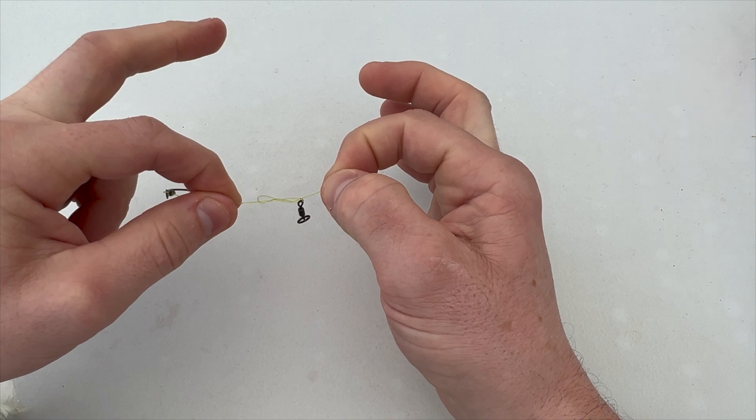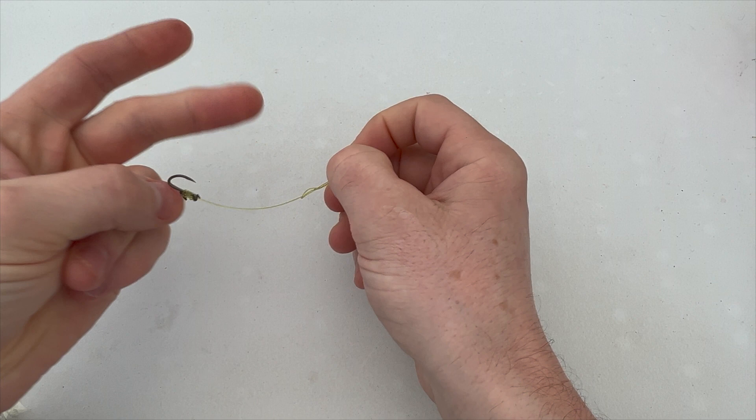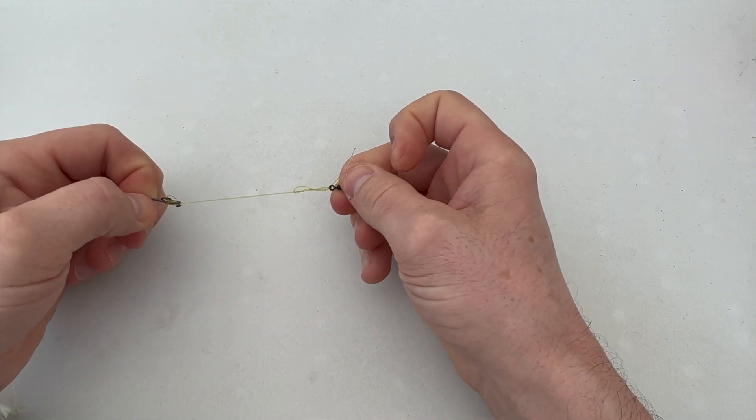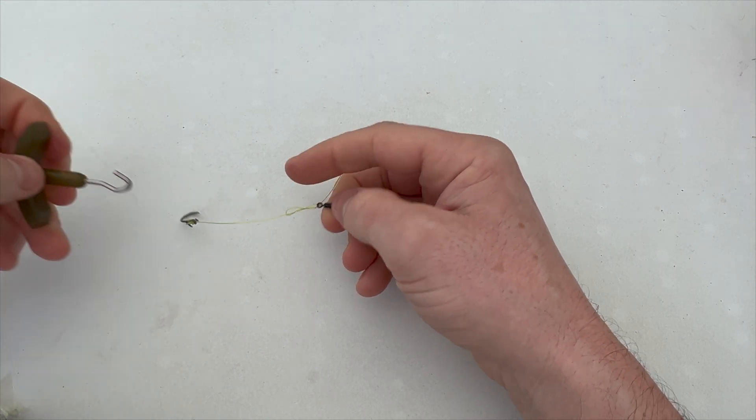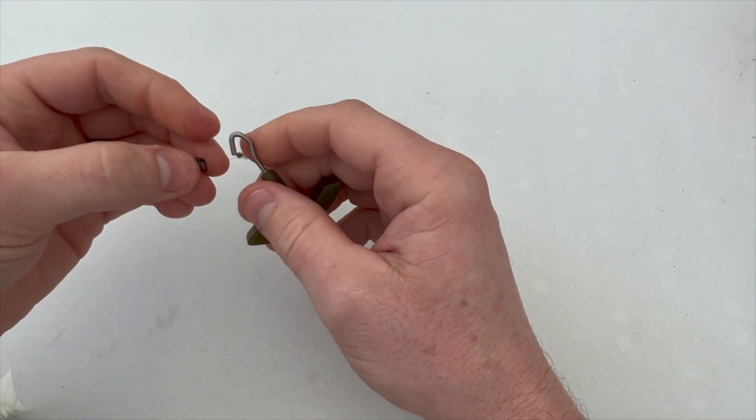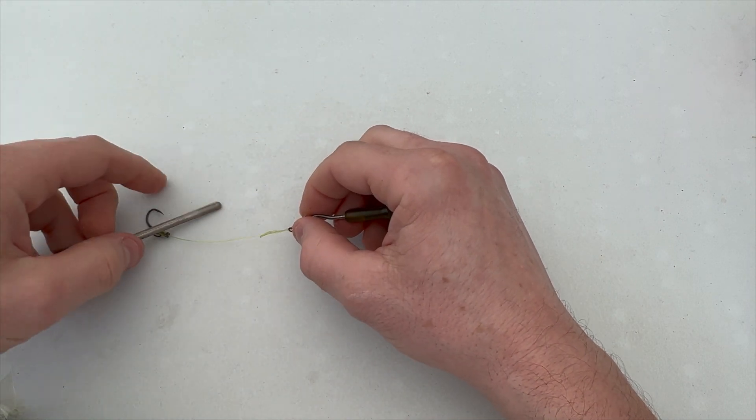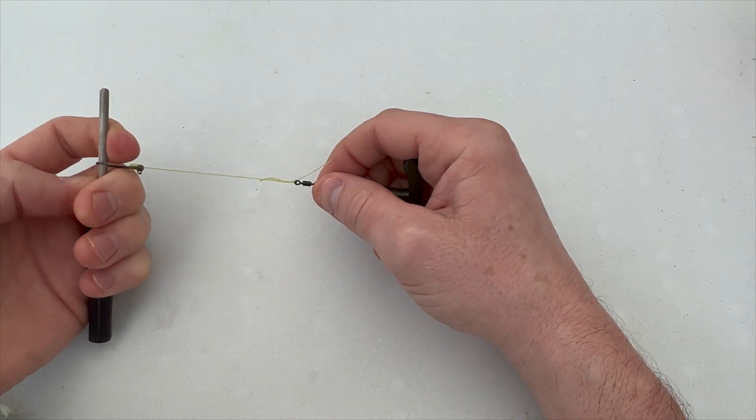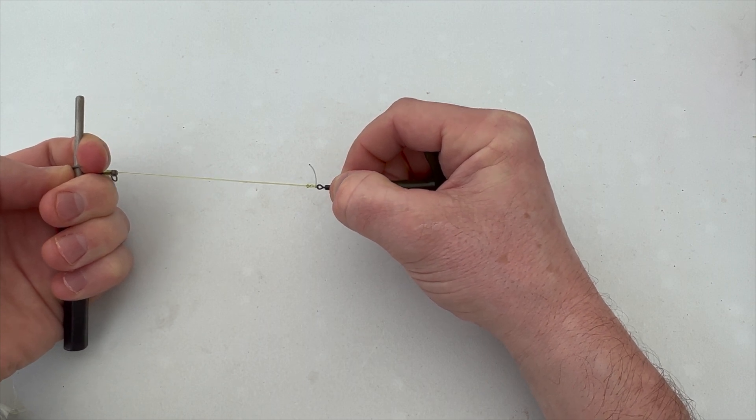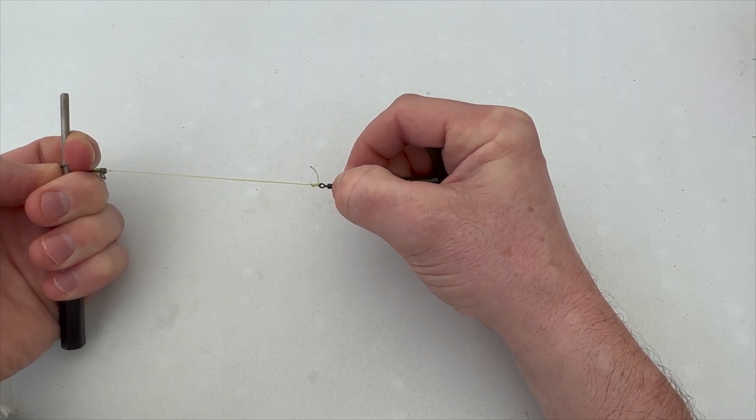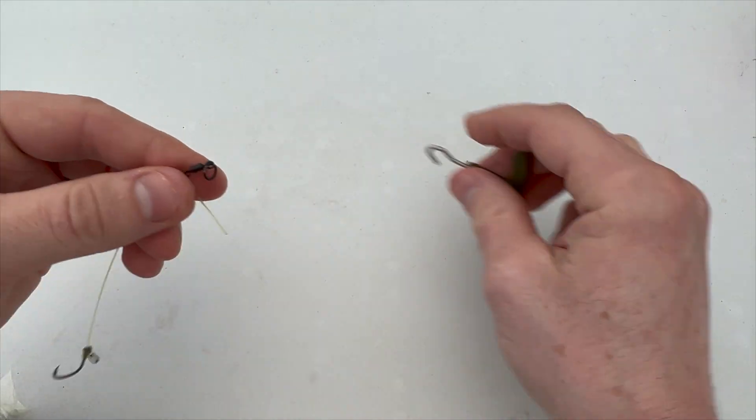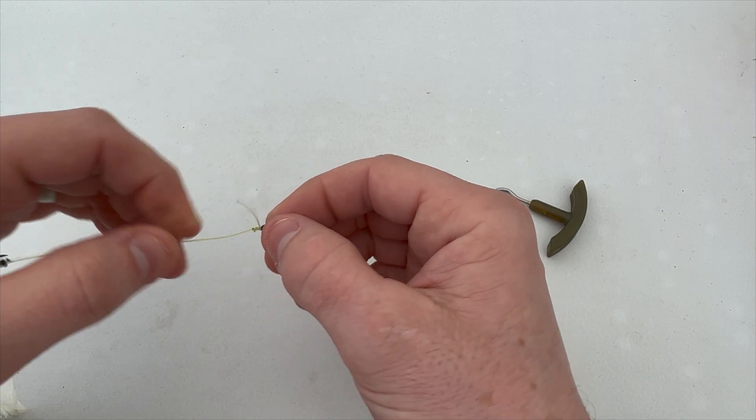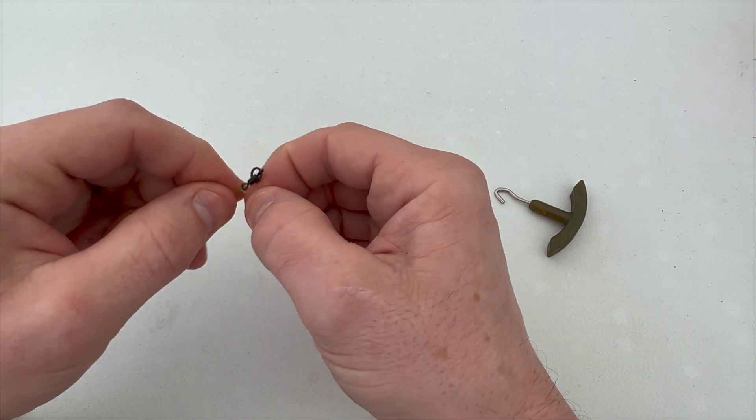Now you just want to slightly moisturize it, slowly tease it down. You may have to take some pulley tools. There we go, I've got a half blood knot, a bit of a kink in there when you tidy up.